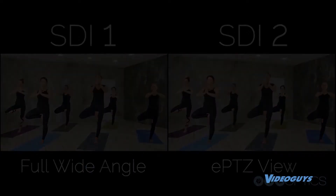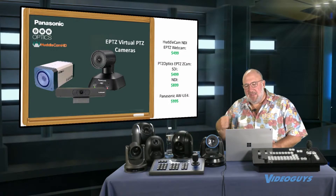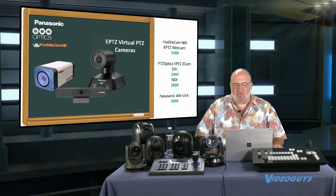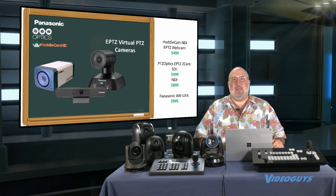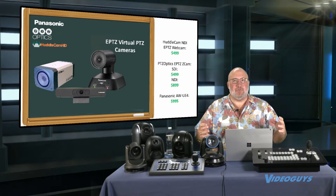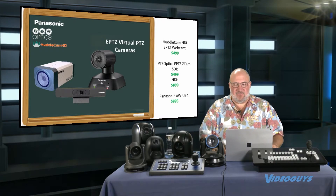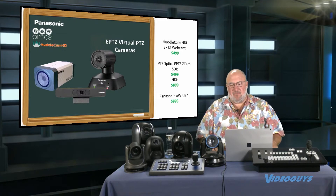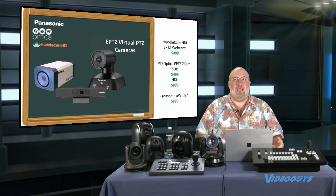We have EPTZ products from PTZ Optics — they have an SDI-only version for $499, or $899 with NDI. They also have a HuddleCam-type unit you can mount on your computer screen for video conferencing, also at $499. Then the folks at Panasonic have their UE4 for $995, so for under $1,000 you can get a 4K EPTZ camera.